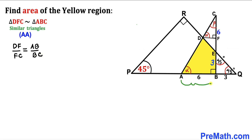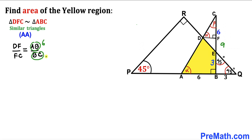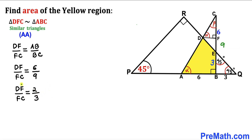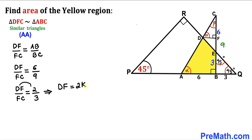AB is 6 centimeters, and BC equals BQ plus QC: 3 plus 6 gives 9 centimeters. So DF/FC = 6/9, which reduces to 2/3. Writing this as a ratio, DF = 2k and FC = 3k for some constant k.